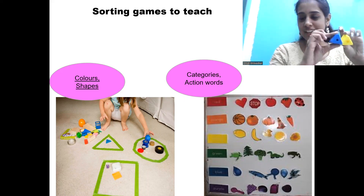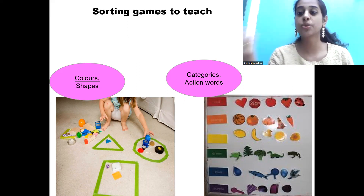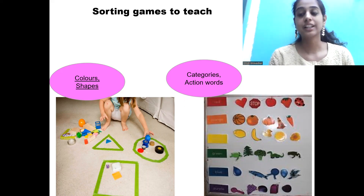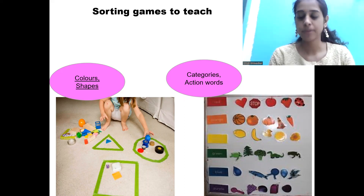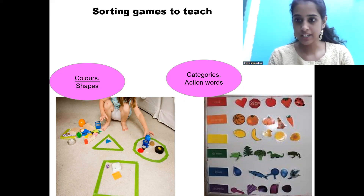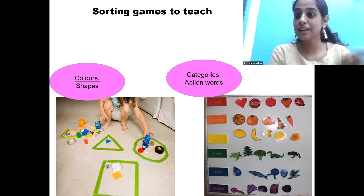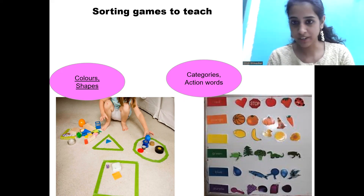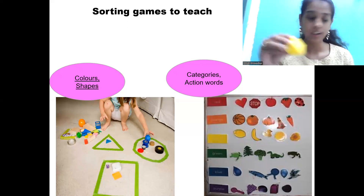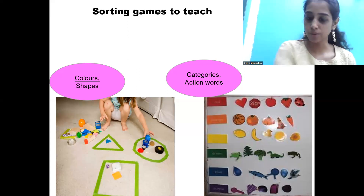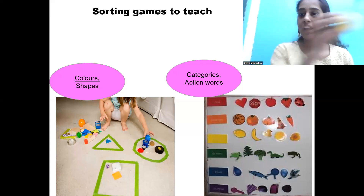Sorting also covers shapes — triangles, squares — and categories such as animals, vegetables, wild animals, domestic animals. You can also use action words: pick it up, put it there, keep it there.